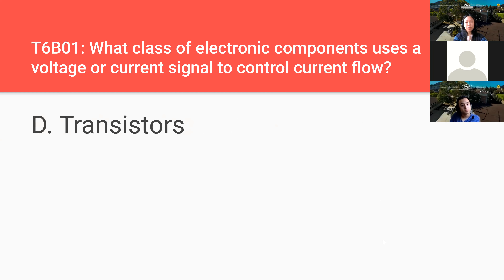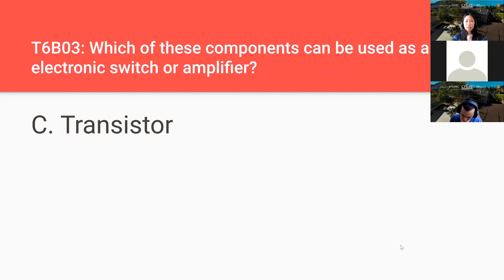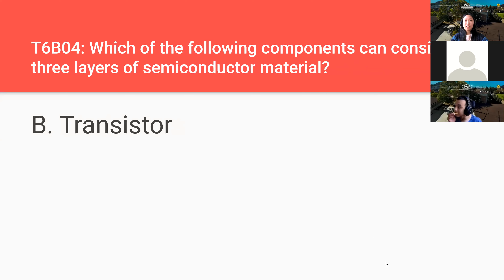What class of electronic components uses a voltage or current signal to control current flow? Transistors. What electronic component allows current to flow in only one direction? A diode. Which of these components can be used as an electronic switch or amplifier? A transistor — by third year you will be dealing with transistors a lot. Which of the following components can consist of three layers of semiconductor material? Again, it's a transistor.